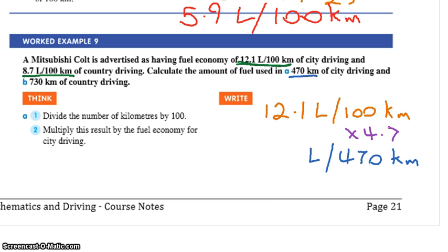So we times that side by 4.7. Do the same to that side. What do you get? If you went to one decimal place, it hasn't asked you to but if you go to one decimal place, that's fine.